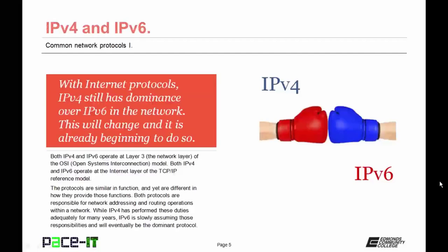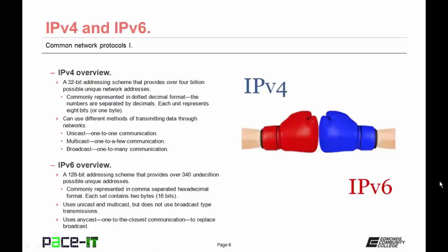Both protocols are responsible for network addressing and routing operations within a network or networks. While IPv4 has performed these duties adequately for many years, IPv6 is slowly assuming those responsibilities and will eventually be the dominant protocol. Most of the world is now out of routable IPv4 addresses, which means the switch to IPv6 is already starting to occur. IPv4 is a 32-bit addressing scheme that provides over 4 billion possible unique network addresses, commonly represented in a dotted decimal format where each unit represents 8 bits or 1 byte.